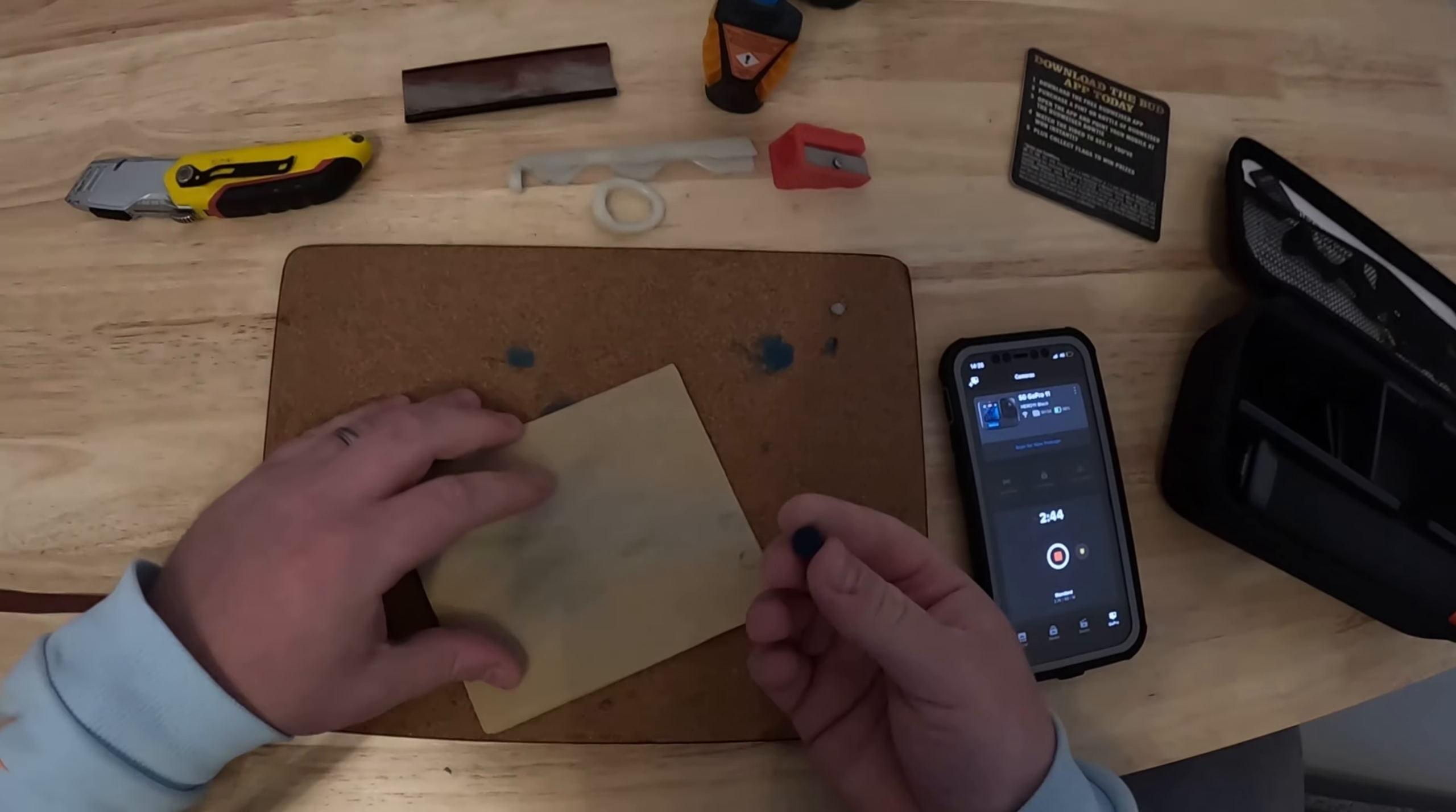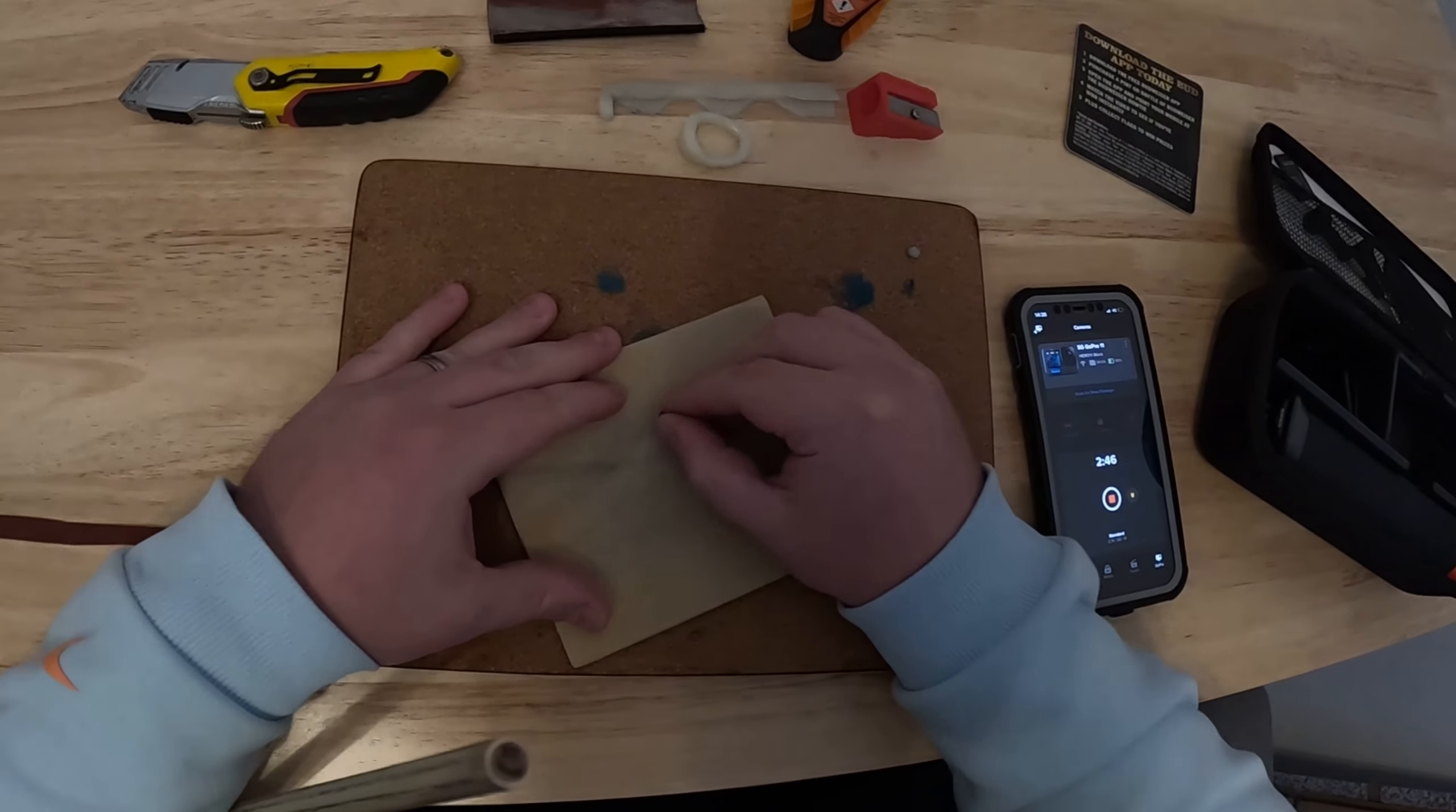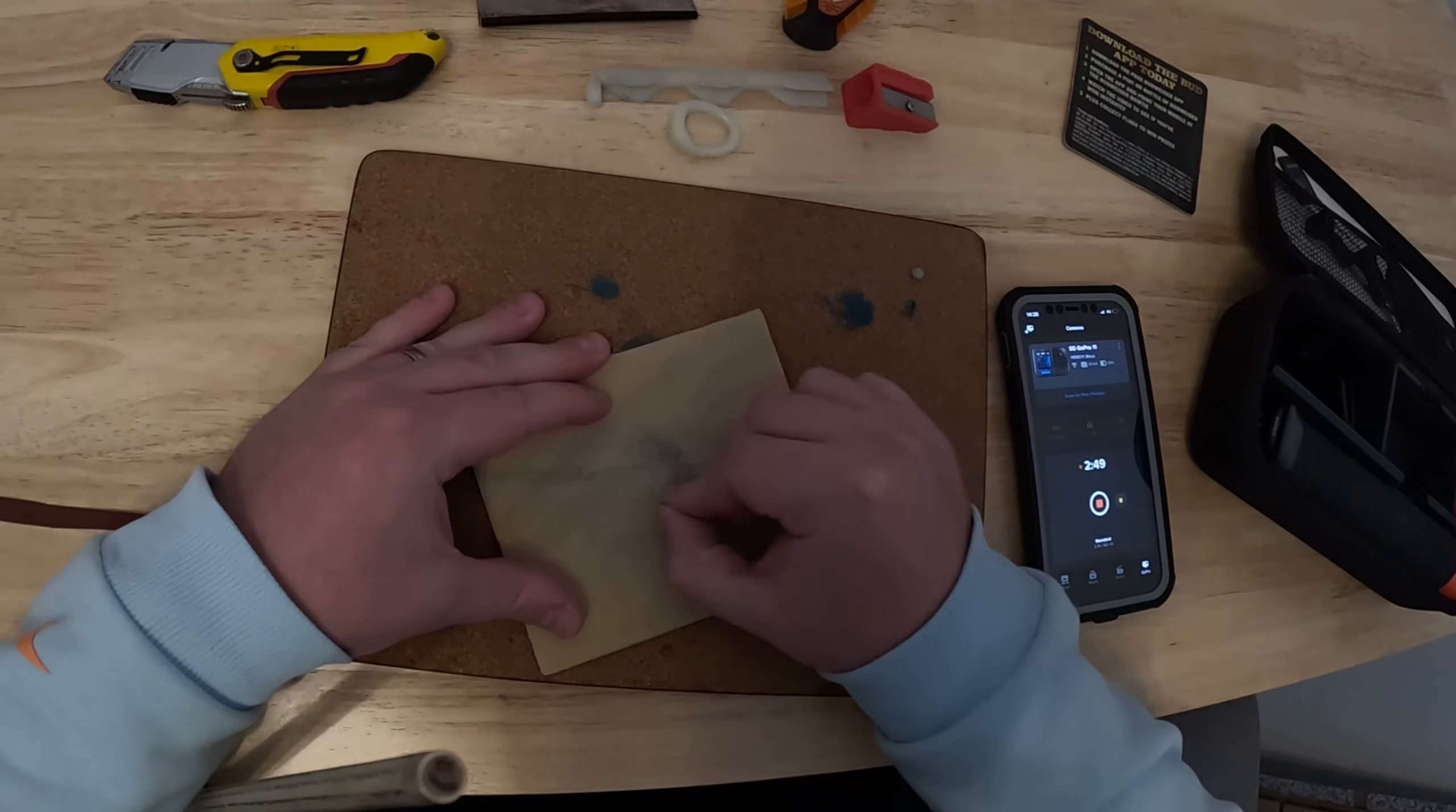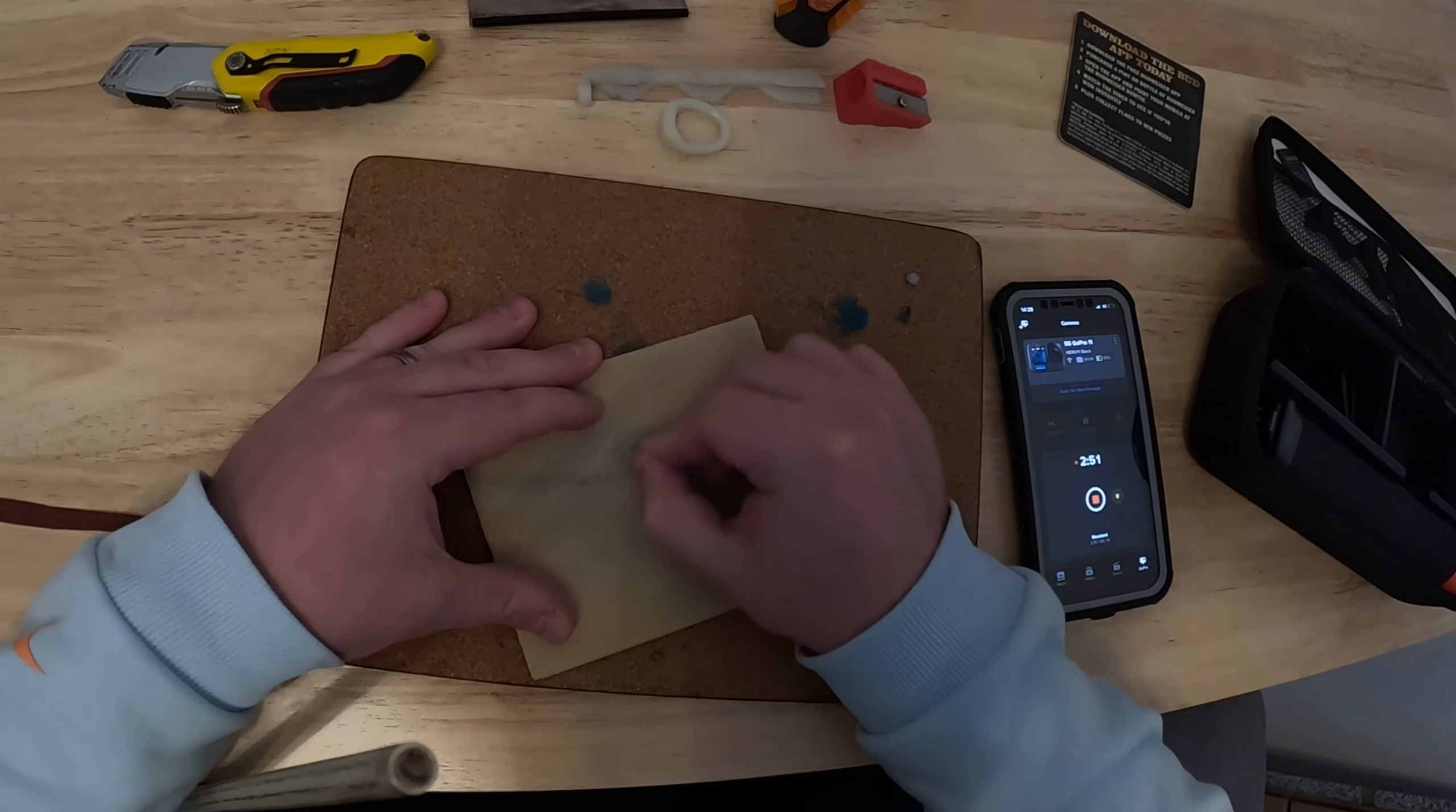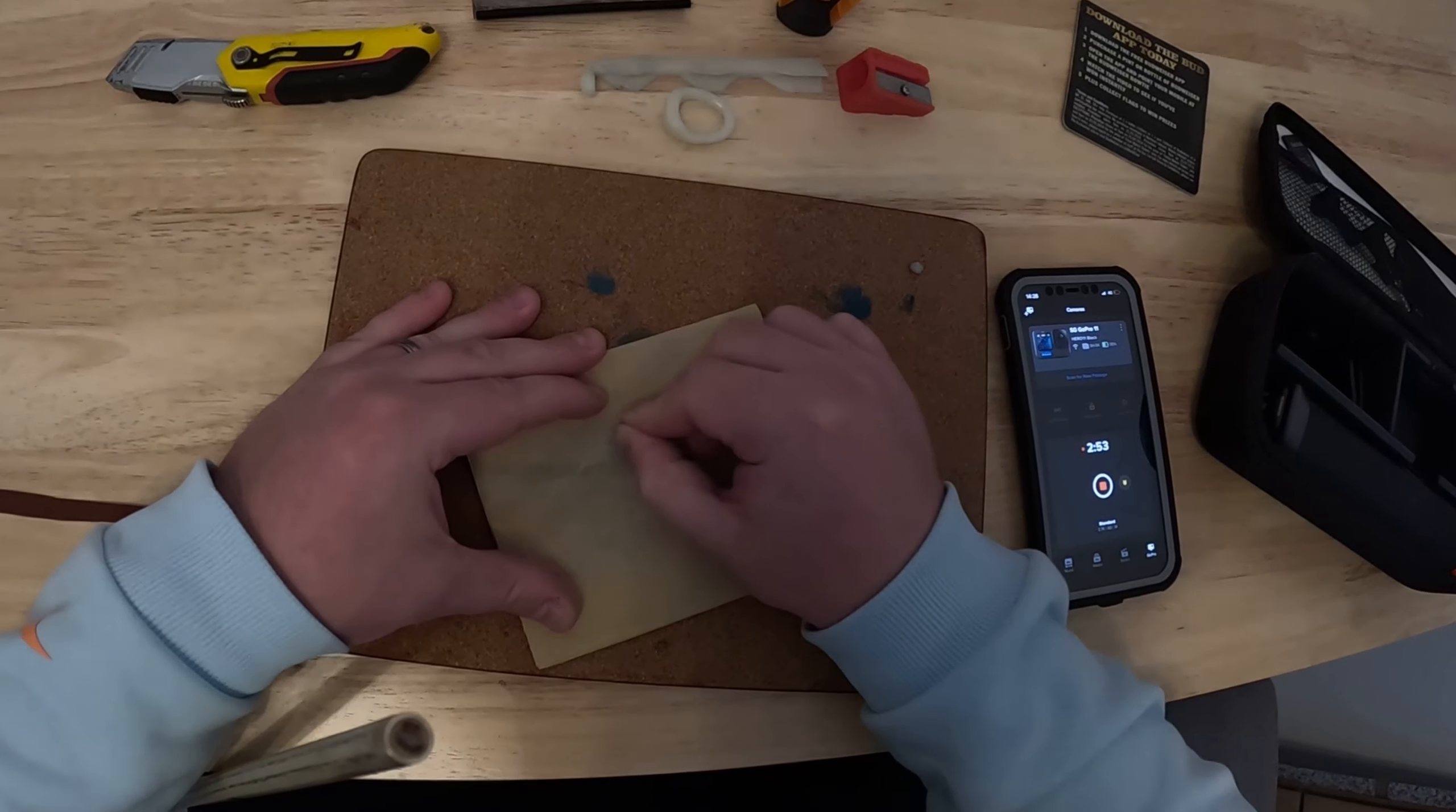What I then do is prep the new tip going on by doing a figure-of-eight motion on the flat sandpaper. This will enable the glue to key to the new tip when sticking it onto the ferrule.